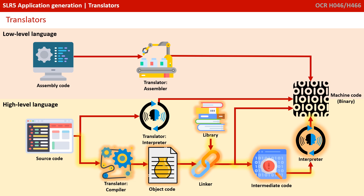The important things to remember here: assembly code is translated by an assembler, and high-level language code is translated by either an interpreter that does one line at a time, or a compiler that translates the entire source code in one go.